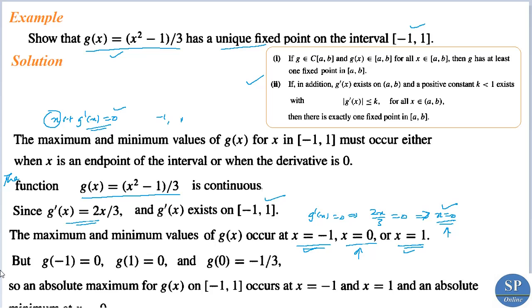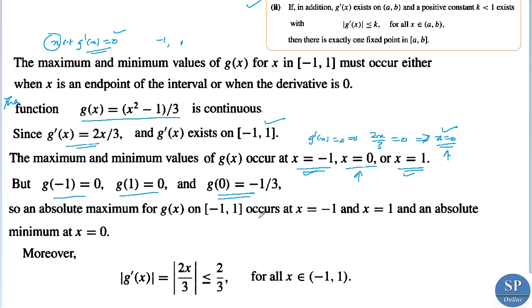Finding the values of g at these points: g(-1) = ((-1)² - 1)/3 = 0, g(1) = (1² - 1)/3 = 0, and g(0) = -1/3. So the absolute maximum occurs at x = -1 and x = 1, and the absolute minimum occurs at x = 0. Moreover, |g'(x)| = |2x/3| ≤ 2/3 for all x in [-1, 1], since |x| ≤ 1 implies |2x/3| < 2/3.